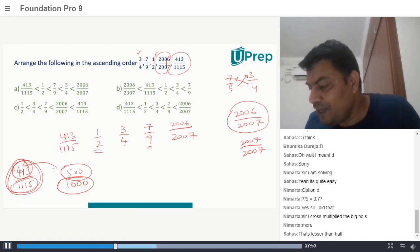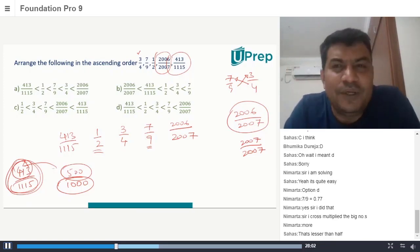Therefore I can clearly say that should be here, 413/1115. What I am trying to teach you, everyone look here. This is a very interesting question. If you solve by cross multiplying and all that, you are wasting a lot of time. Few questions are not given to you for solving, few questions are given to you to test your ability to think fast.